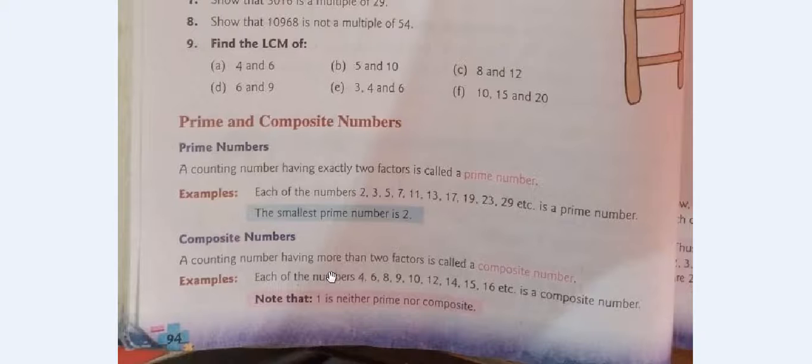Composite numbers have more than two factors. The smallest composite number is 4. Remember, 1 is neither prime nor composite because it has only one factor.